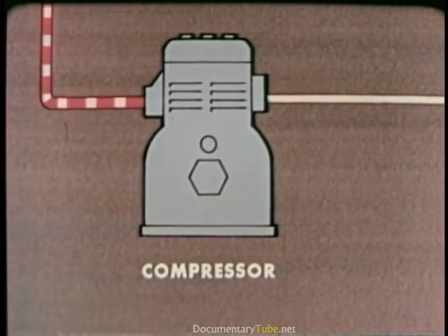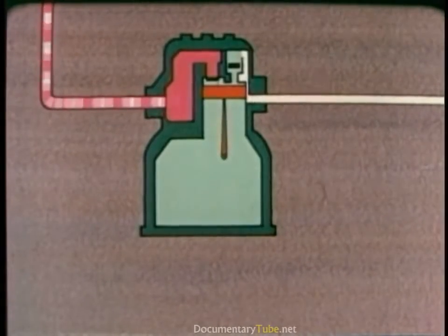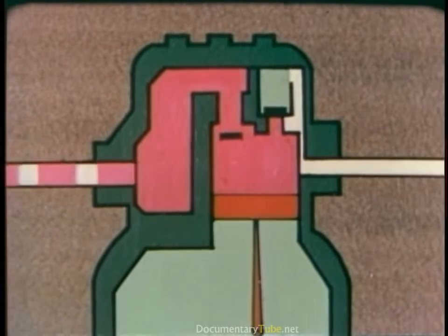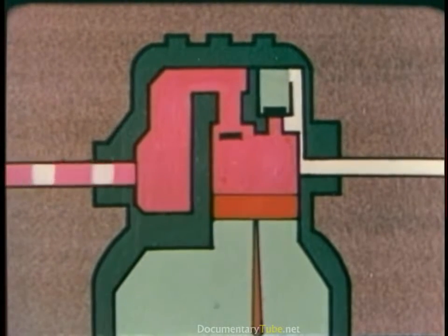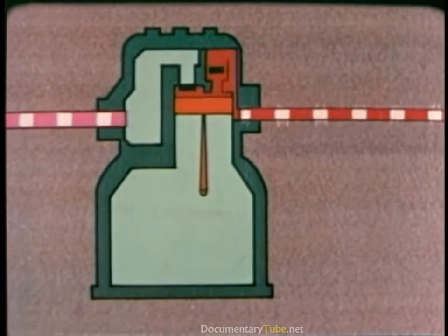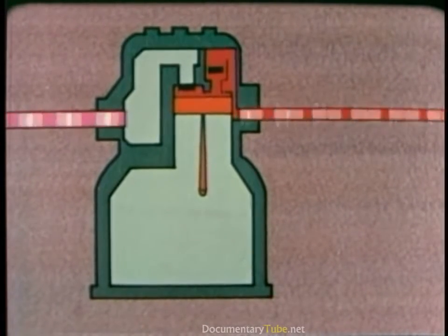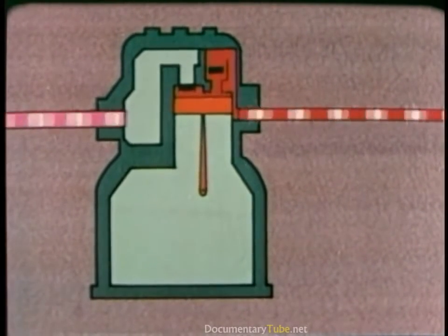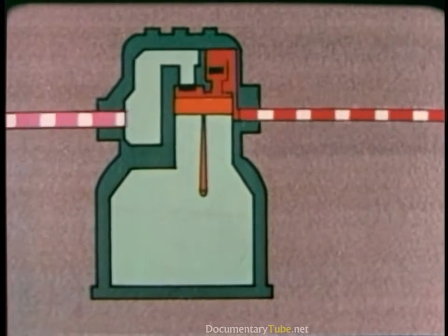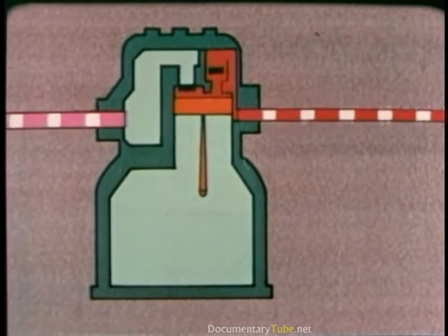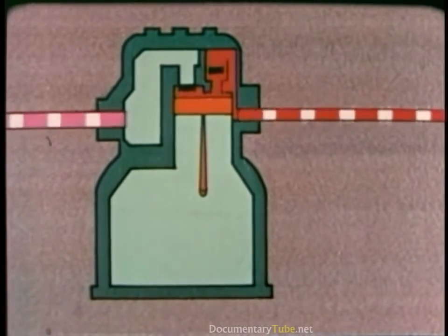The gas is sucked through the connecting line into the compressor. As the piston moves down, the suction valve opens. The gas is sucked into the compressor. As the piston starts up again, the suction valve is forced shut and the discharge valve is pushed open. On this stroke, the gas is compressed. Pressure goes up, temperature goes up. The gas, now at high pressure and high temperature, flows into the condenser.